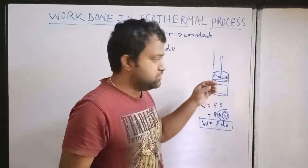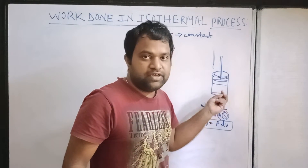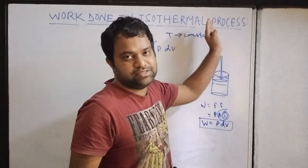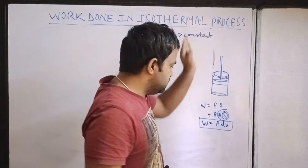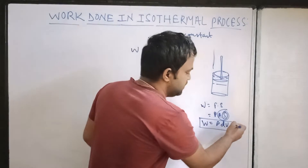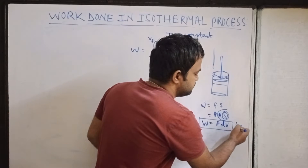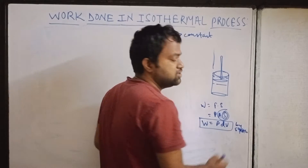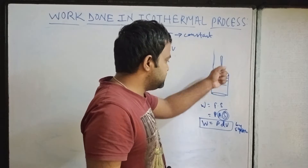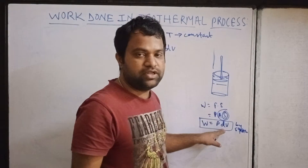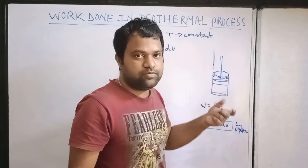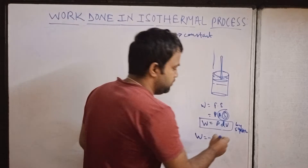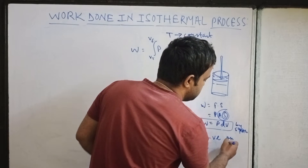Work done is negative when work is done on the system. If you supply heat energy, it changes the internal energy and expands the system, giving a positive work done — that is work done by the system. When you compress the system, volume reduces, so dV is negative, and work done becomes negative when work is done on the system.